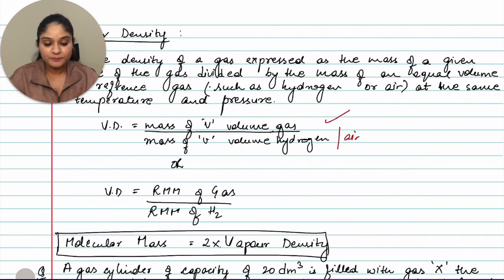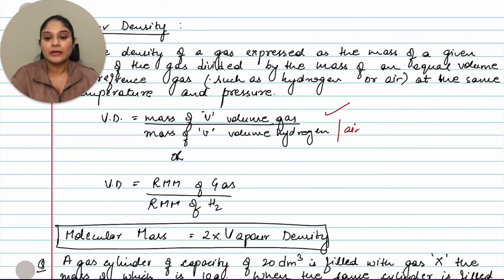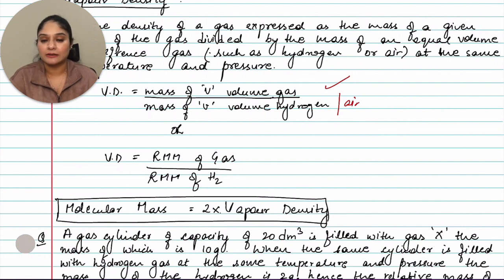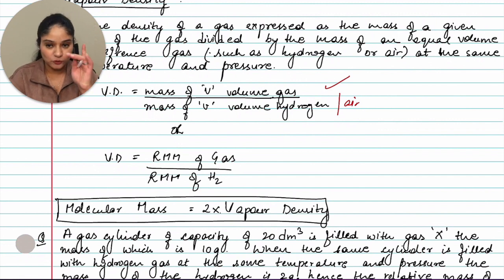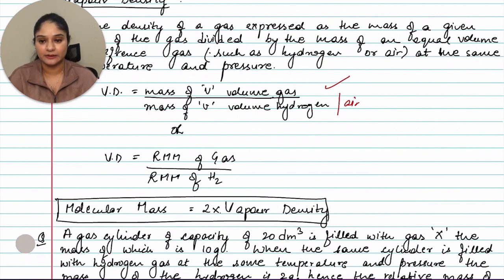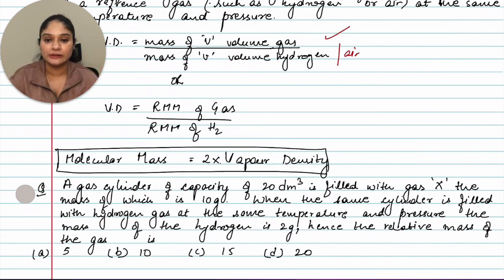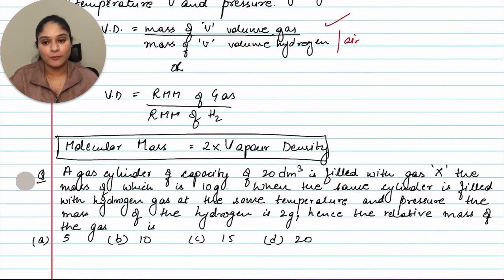Another formula is: vapor density = relative molecular mass of the gas divided by relative molecular mass of the reference gas (hydrogen or air). A third key formula is: molecular mass = 2 × vapor density. All of these formulas are important.